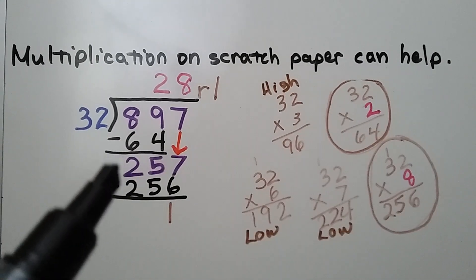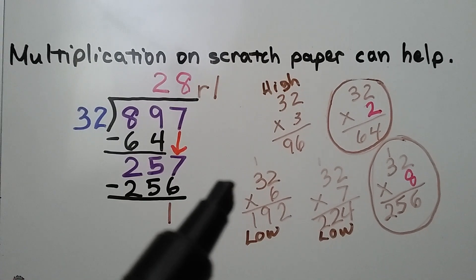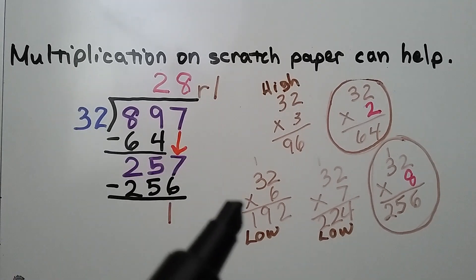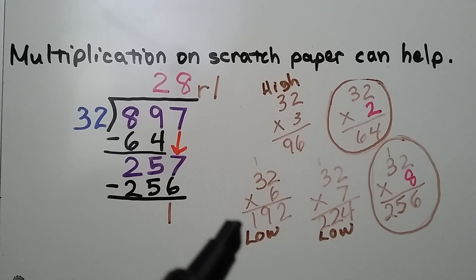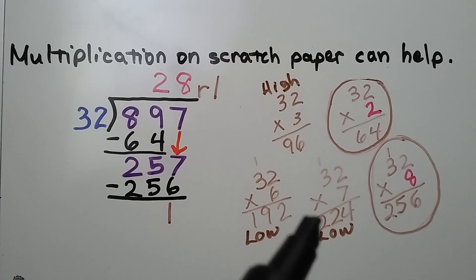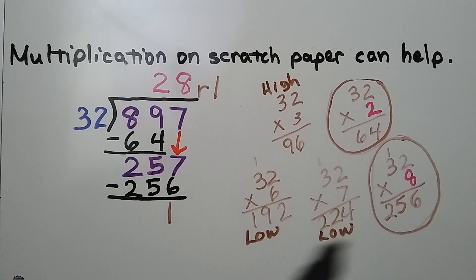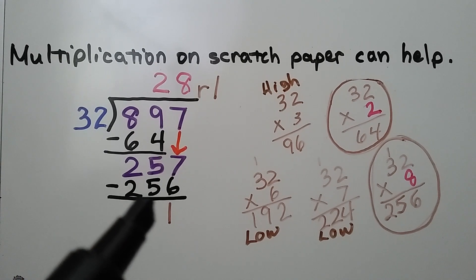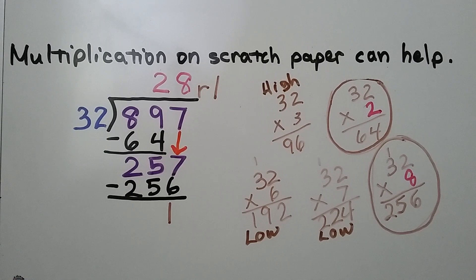Now we have 257 divided by 32. We try 32 times 6 — we get 192, which is kind of low; we can fit another 32. So we adjust and try 32 times 7, which is 224 — still low. We try 32 times 8, which is 256, very close to 257. We subtract and get a remainder of 1. Our answer is 28 remainder 1.